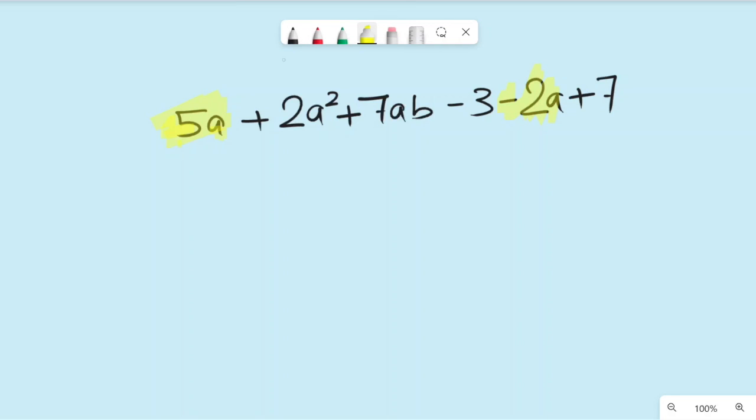Let's solve them first. It's a positive 5 minus 2. Together they will give you 3a. 5a minus 2a is 3a. So these two together will come with a positive 3a.